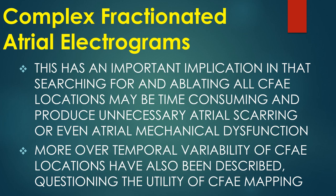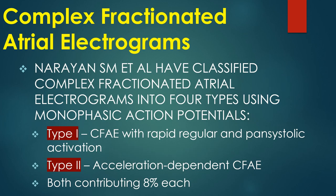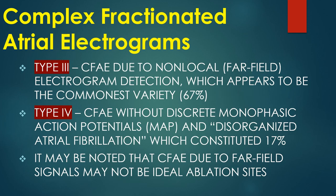Temporal variability of CFAE locations has also been described, questioning the utility of CFAE mapping. Narayan and colleagues classified CFAE into four types using monophasic action potentials: Type 1 — rapid, regular and pansystolic activation; Type 2 — acceleration-dependent CFAE (both contributing 8% each); Type 3 — CFAE due to non-local or far-field electrogram detection, the commonest variety; and Type 4 — CFAE without discrete monophasic action potential with disorganized AF, constituting 17%. CFAE due to far-field signals may not be ideal ablation sites.